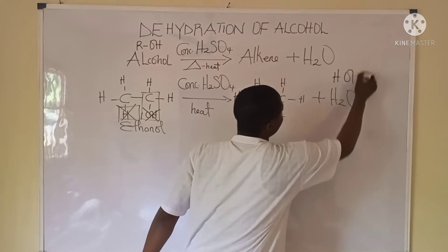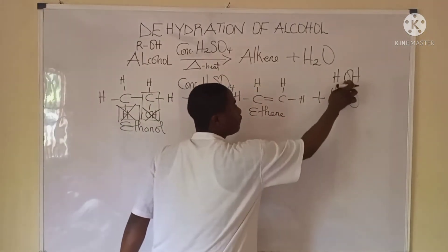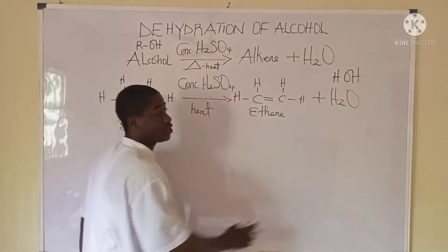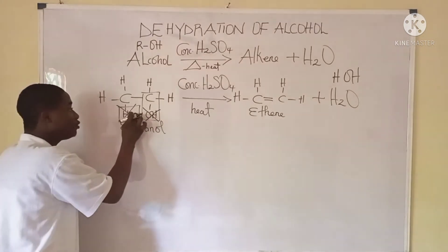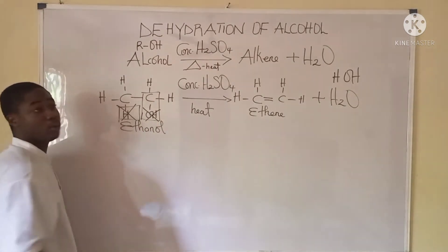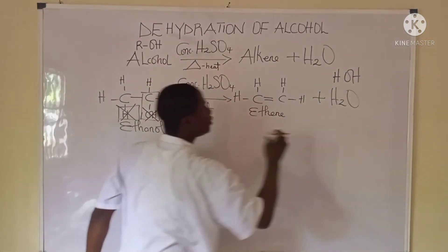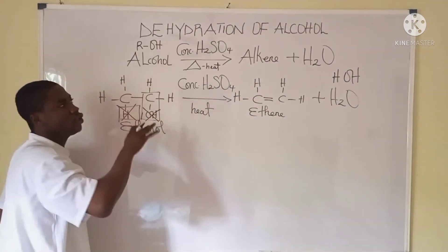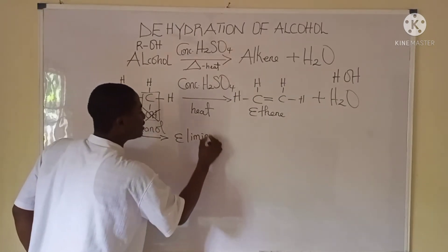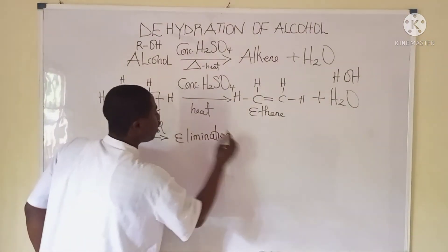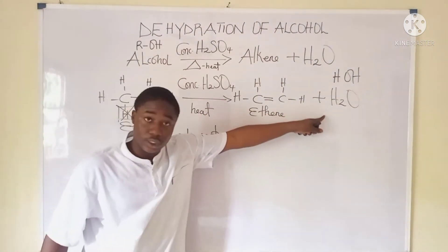The hydrogen atom and the hydroxide group come together to form water, written as H₂O — two atoms of hydrogen and one atom of oxygen. When you remove the hydroxide group and the hydrogen atom, there is formation of a double bond, which is the alkene — basically ethene — with removal of water. Dehydration of alcohol is therefore an elimination reaction.